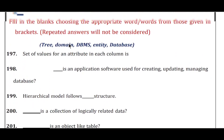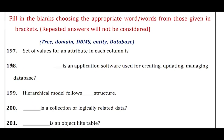Question 197: Set of values for an attribute in each column is called — the answer is domain. Question 198: Dash is an application software used for creating, updating, and managing a database — the answer is DBMS (Database Management System). Question 199: The hierarchical model follows a dash structure — the answer is tree structure. Question 200: Dash is a collection of logically related data — the answer is database. Question 201: Dash is an object like a table — the answer is entity.